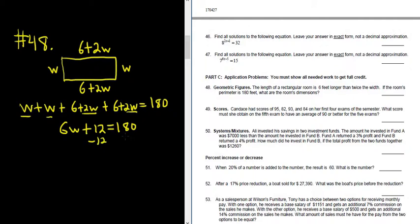Subtract 12 from both sides. So we get 6w equals 168, right? 180 minus 12. So 180 minus 10 is 170, minus 2 more is 168.